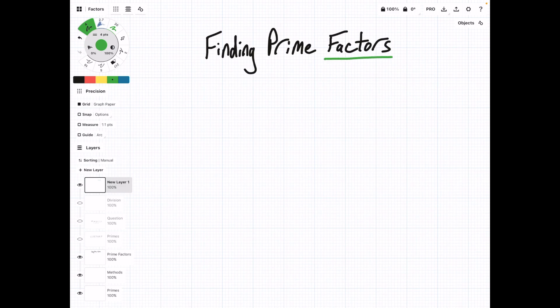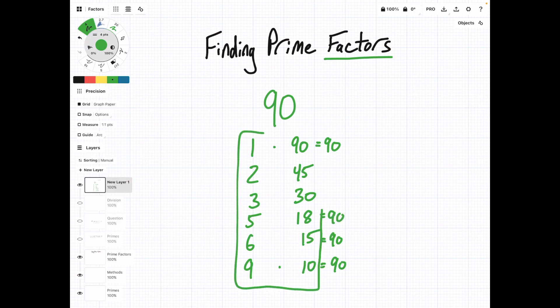So given any number, let's say 90, the factors of that number are going to be other numbers that multiply to equal it. So for 90, we have factors of 1 and 90. 1 times 90 equals 90. And we have 2 and 45, 3 and 30, 5 and 18, 6 and 15, and finally 9 and 10. So if you multiply across any of these rows, you're going to get 90. And so these are the factors of 90.